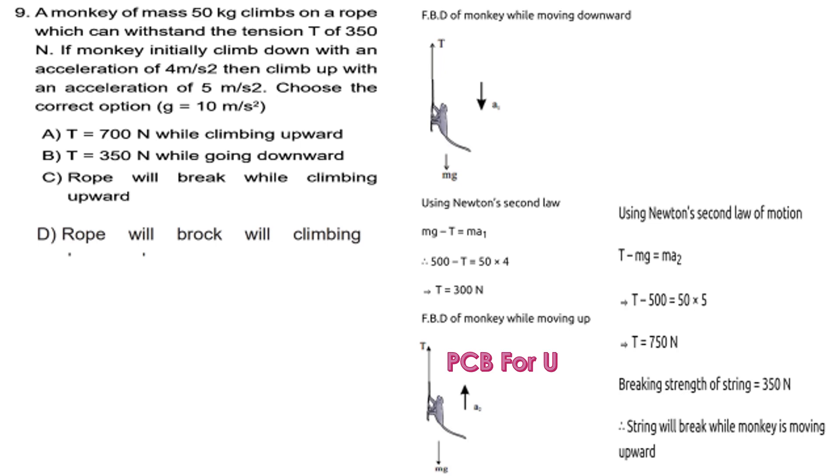A monkey of mass 50 kg climbs on a rope which can withstand the tension T of 350 N. If the monkey initially climbs down with an acceleration of 4 m/s², then climbs up with an acceleration of 5 m/s², choose the correct option. g is equal to 10 m/s².